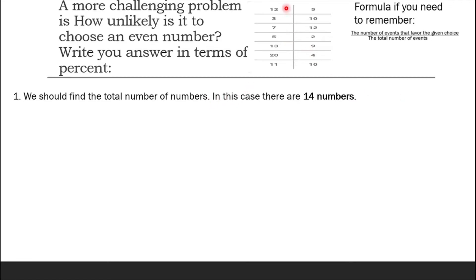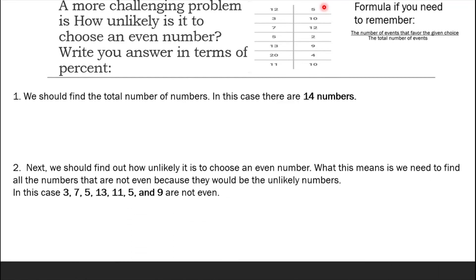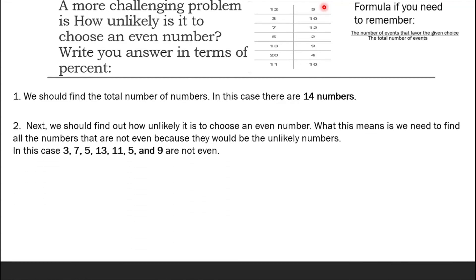We should find the total number of numbers. In this case there are 14 numbers. We can count 1, 2, 3, 4, 5, 6, 7, 8, 9, 10, 11, 12, 13, 14. Next we should find out how unlikely it is to choose an even number. What this means is we need to find all the numbers that are not even because they would be the unlikely numbers.